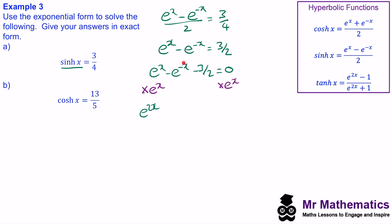When we add the powers of negative x and x they cancel to make zero, and e^0 = 1. Then we have minus 3/2 times e^x, and this equals zero. Writing in descending powers: e^(2x) − (3/2)e^x − 1 = 0.